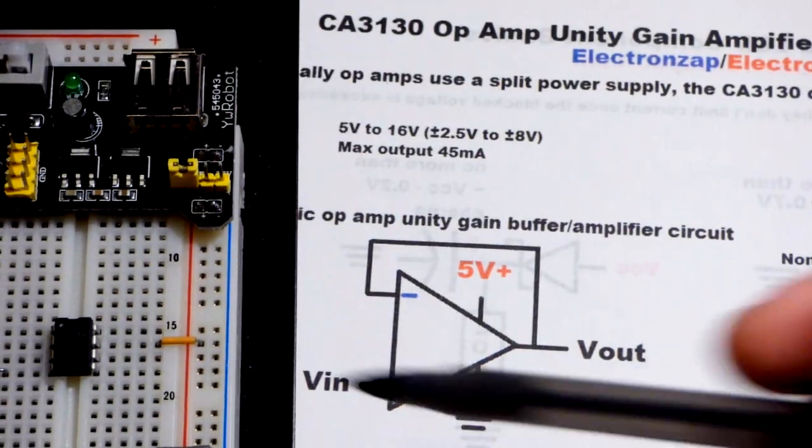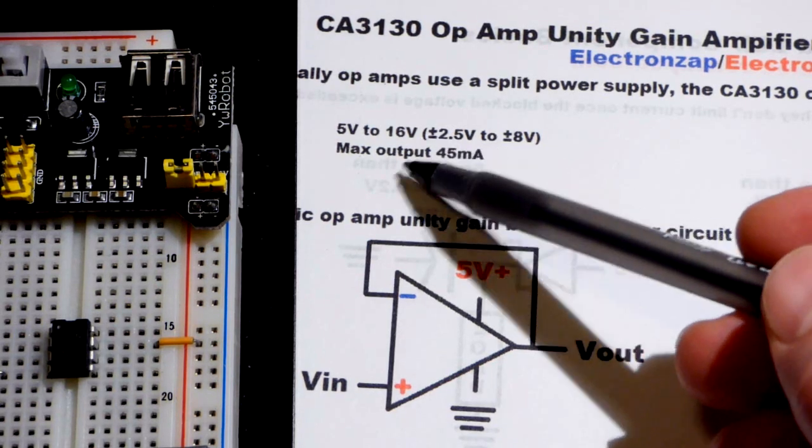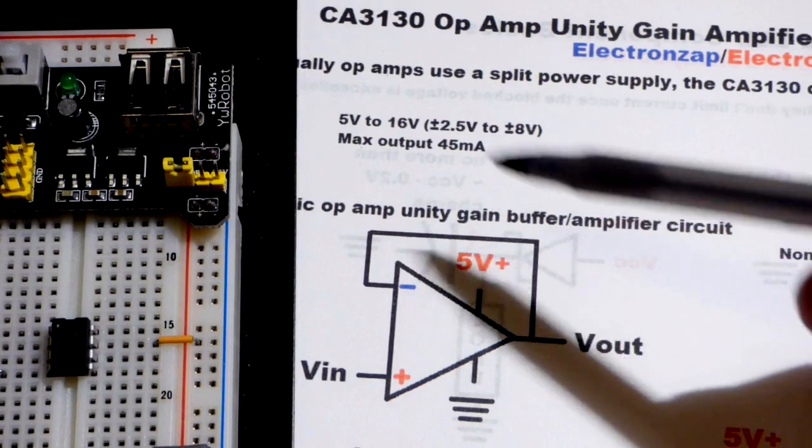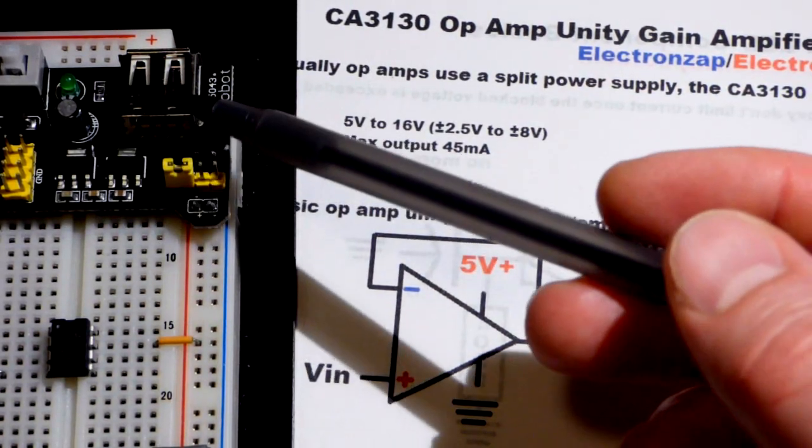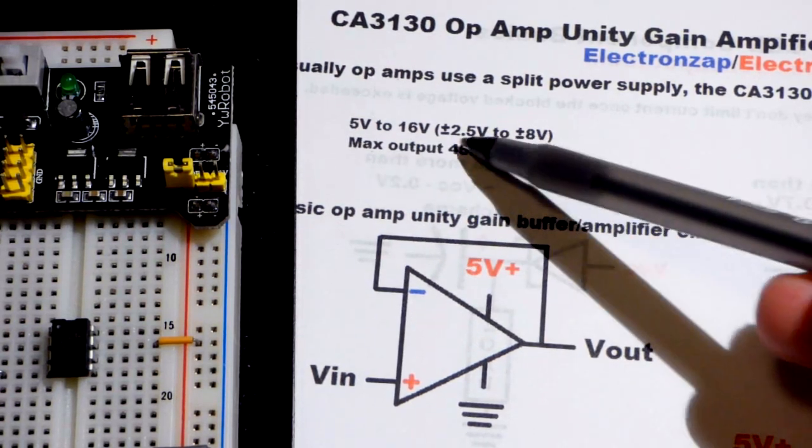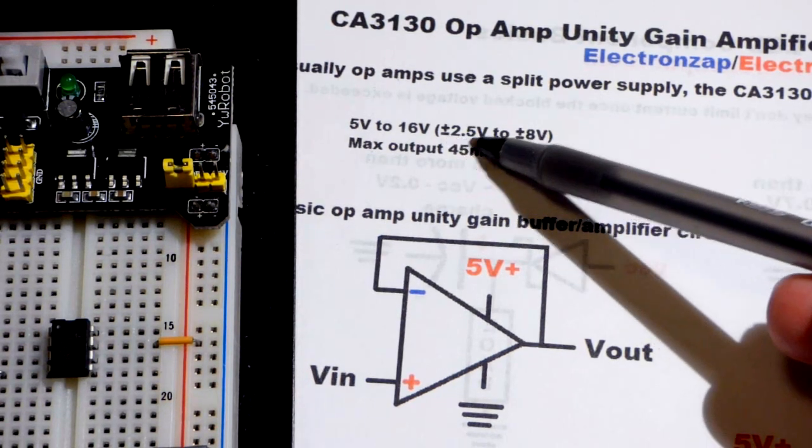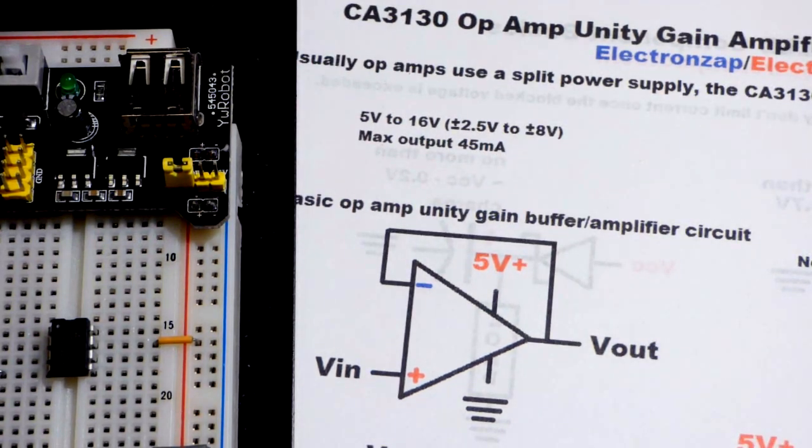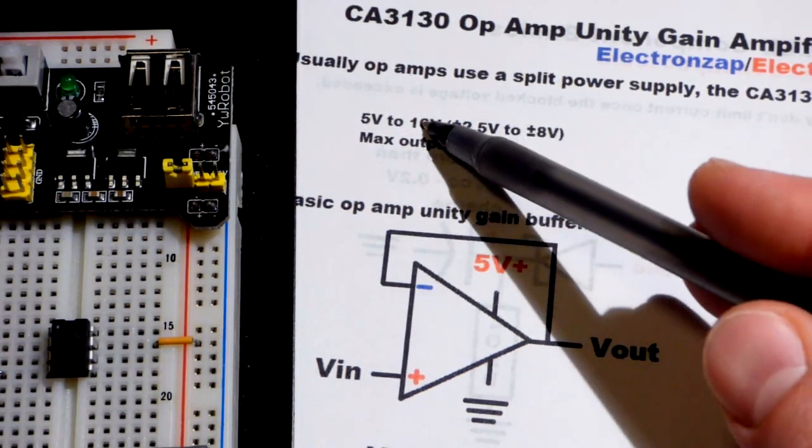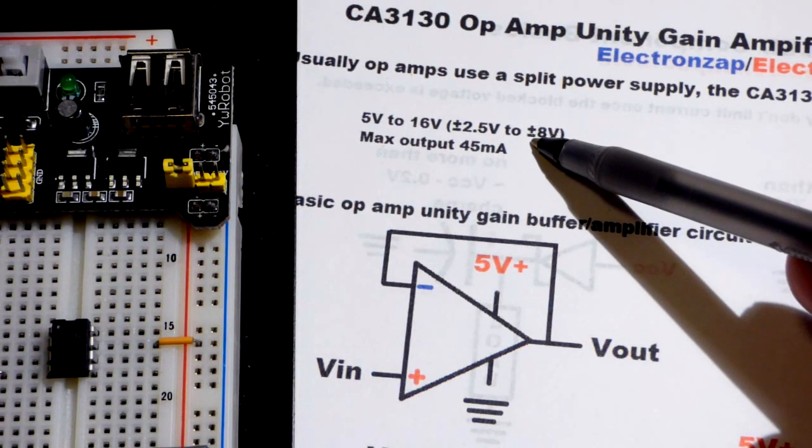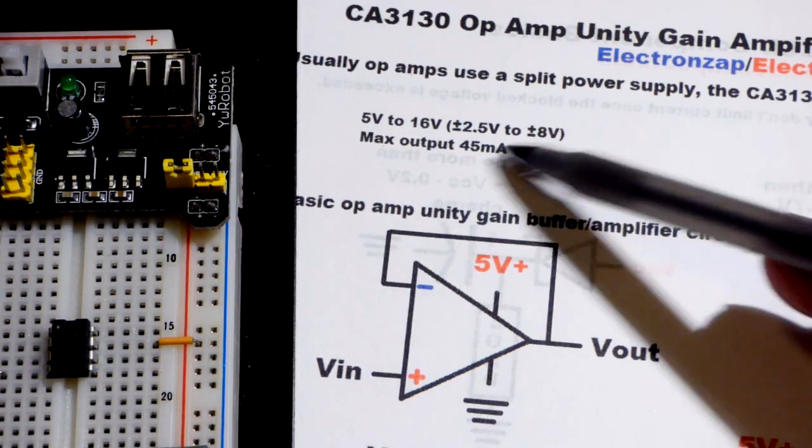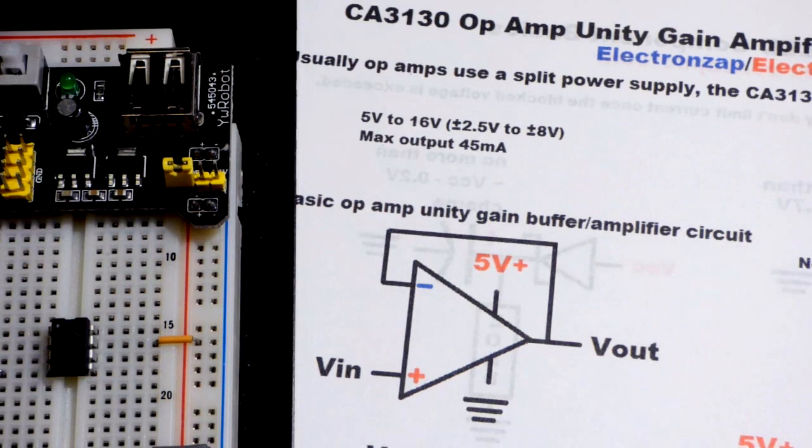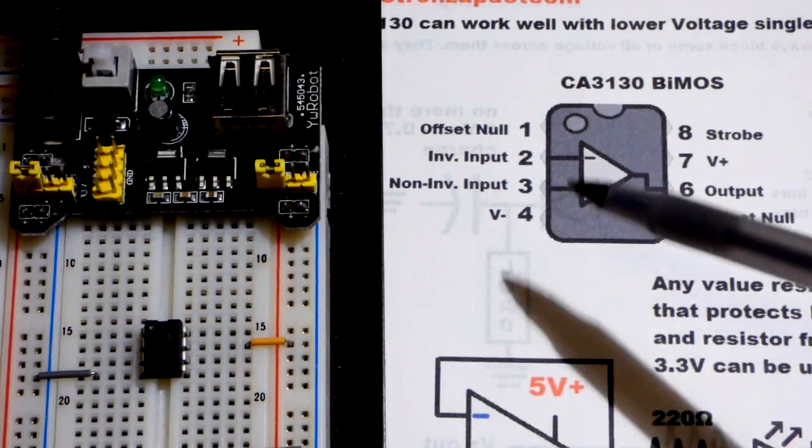This op-amp, according to the data sheet, can go from 5 volts to 16 volts with a single supply, which is really all I have. I have some ways to get a split supply, but for actual power supplies, I only have the single supply. Split power supply means 2.5 volts above 0 volts and 2.5 volts below 0 volts. You can go up to 16 volts with a single supply, and with a split supply you can go up to 8 volts and down to 8 volts, 16 volts of range. The maximum output, according to the data sheet, is 45 milliamps. Typical is 20 or 22 milliamps.